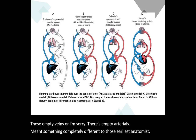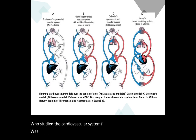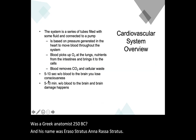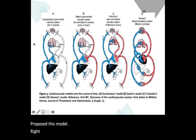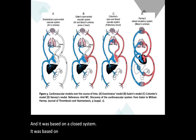The earliest anatomist who studied the cardiovascular system was a Greek anatomist from 250 B.C. named Erasistratus. Erasistratus proposed a model for how the cardiovascular system worked, and it was based on an open system, not a closed system.